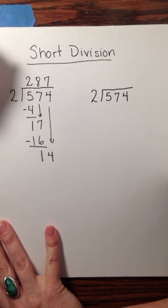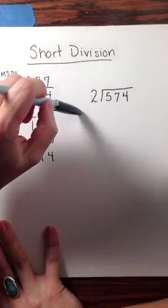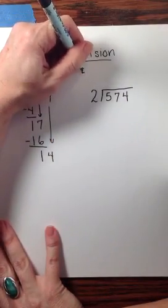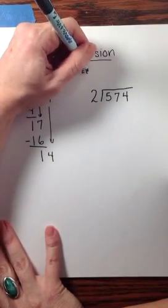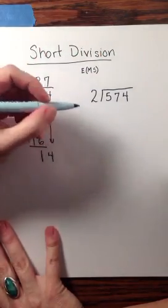so in this one we estimate, we multiply, we subtract, we bring down. With short division, we're going to still do the estimating, but the multiplying and subtraction steps happen in your head instead of on your paper,